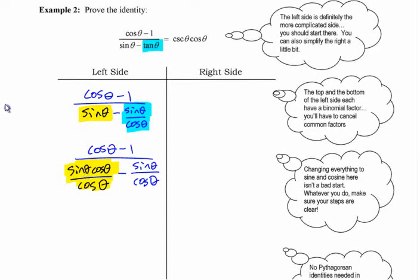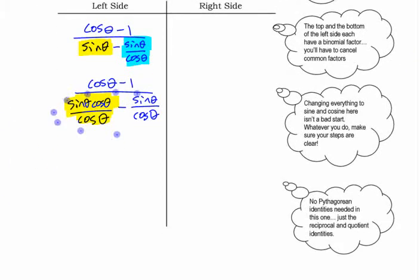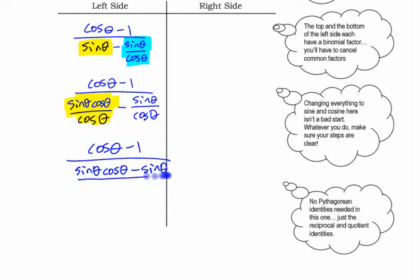If you start to do things like times cosine here, you're going to write things that are mathematically incorrect. Don't do that. Just make the change in the next step here. Then you want to combine these two because that was the whole point of making them the same denominator. But you want to leave the top alone. So you're going to have sine cos minus sine over cosine.